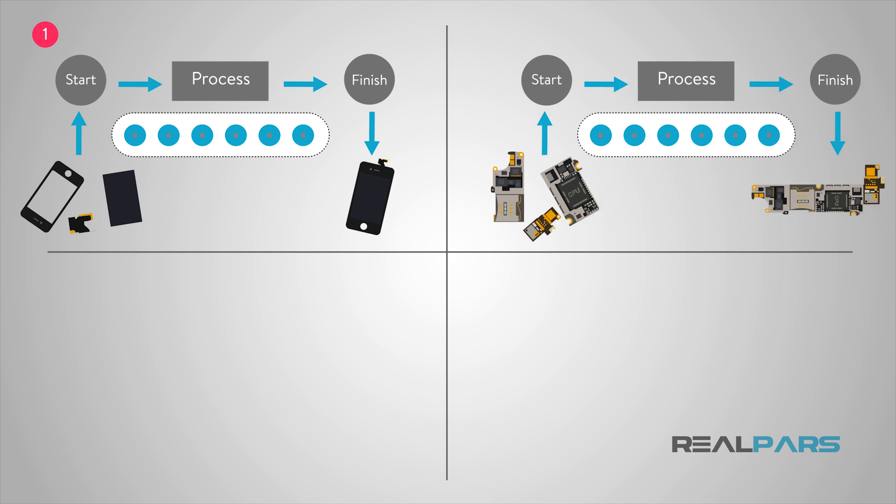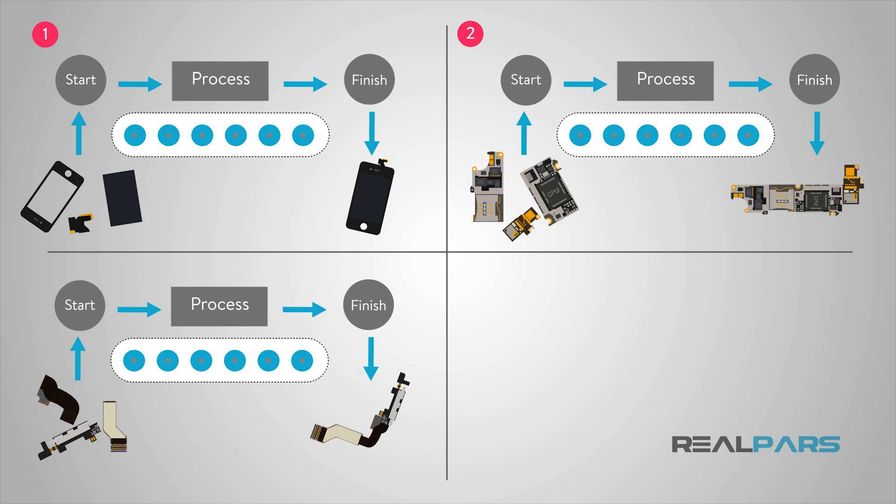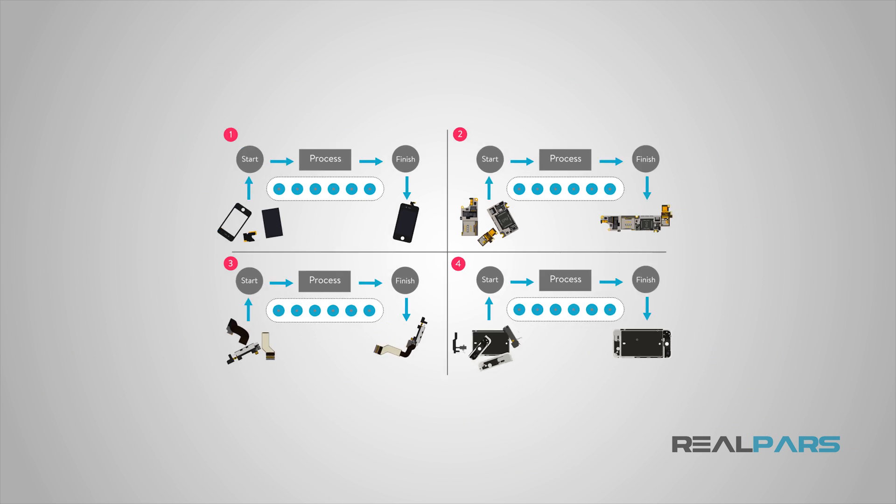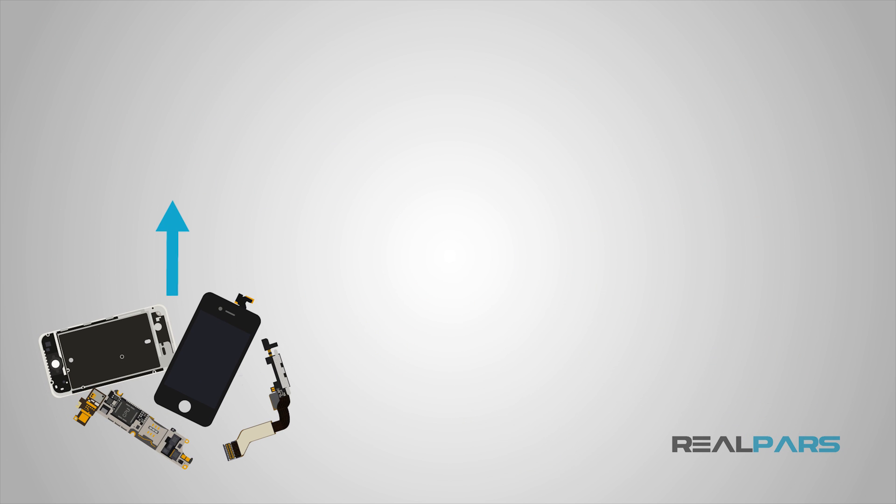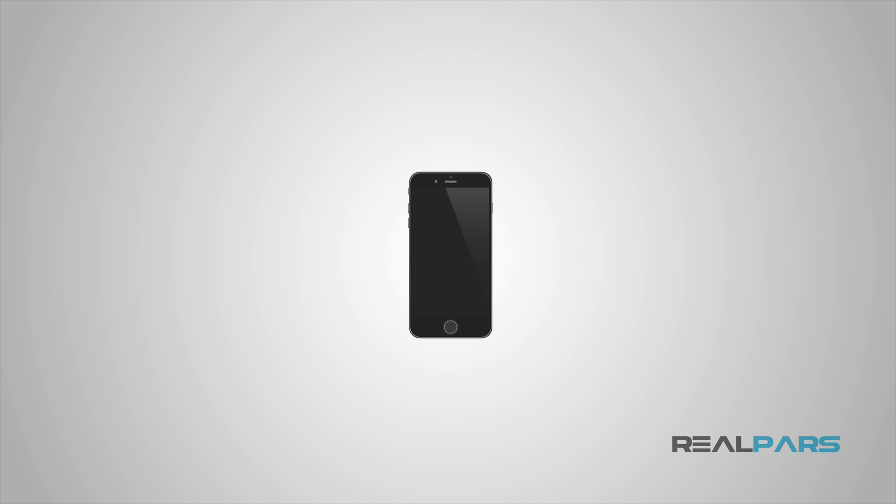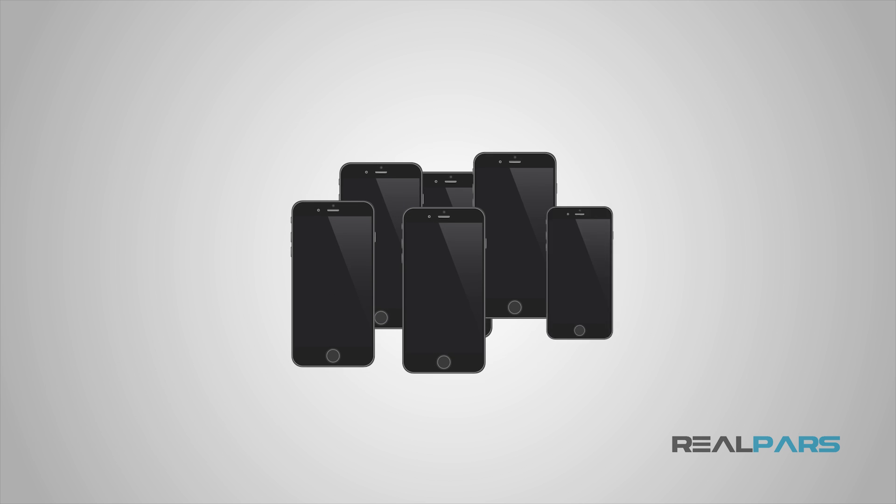There are all of those components that were created by discrete automation processes, meaning they could count a component or part at the end of the process. Then you can take all of those countable parts and assemble them. The final product is a countable product which makes it a discrete automation process.